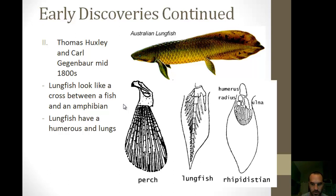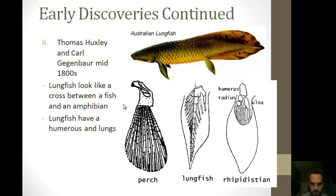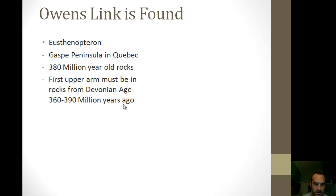Owen found a species called Eusturpanon in Quebec, in rocks about 300 million years old. What it told Neal Shubin was that this fish already had a kind of fully developed arm with all the bones. So Shubin knew he had to look in even earlier, Devonian-age rocks. The bone of that Eusturpanon already showed the one-bone, two-bone, many-bones pattern that Shubin was looking for.